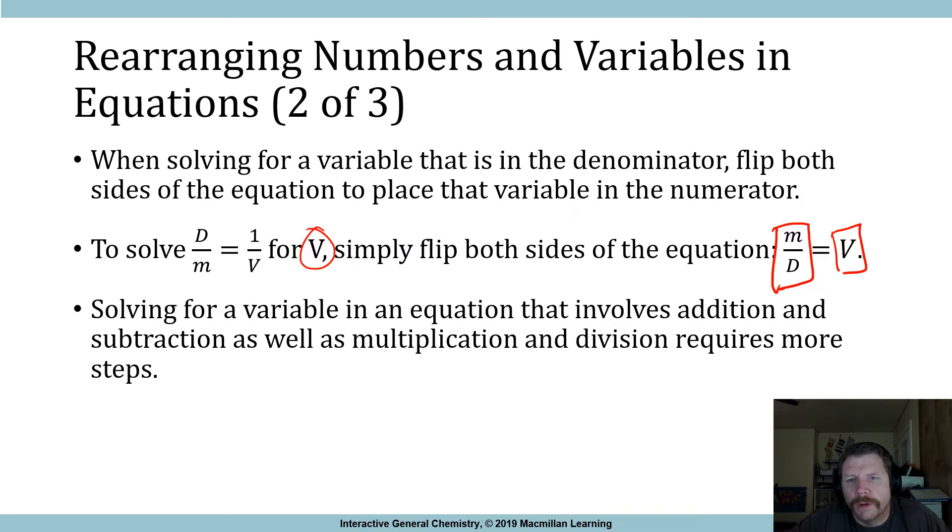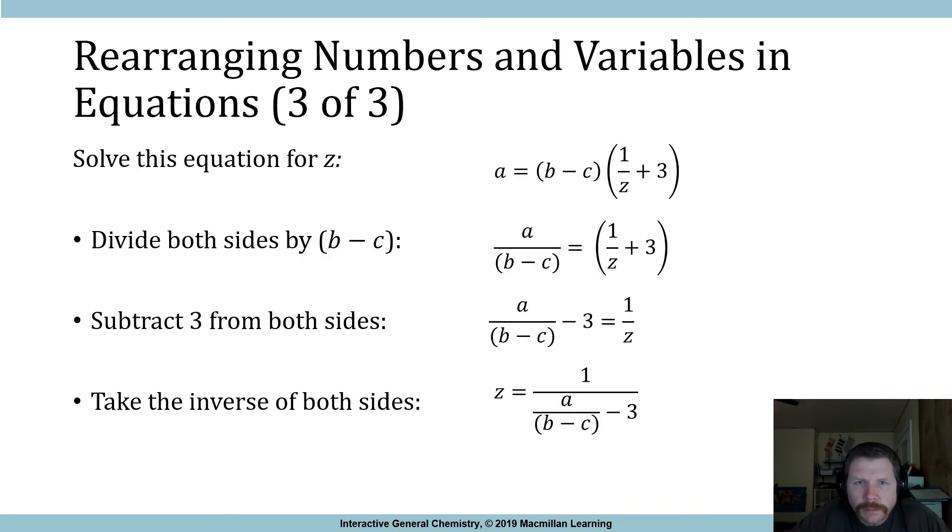Solving for a variable in an equation that involves addition or subtraction as well as multiplication requires a couple more steps. So rearranging numbers and variables in equations, part 3 of 3. We need to solve for z. Okay, so this is a little bit more complicated because that's what we want to solve for. So how would we go through this? Well, the first thing that we're going to do is divide both sides by b minus c, and that's going to take this—so divide by b minus c, that's going to cancel out there.